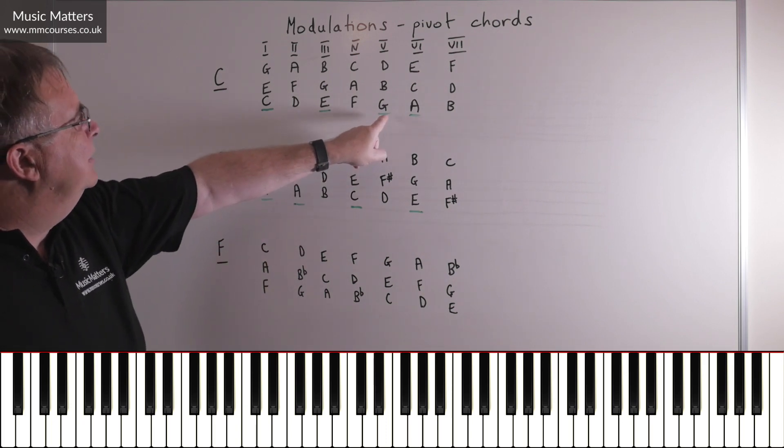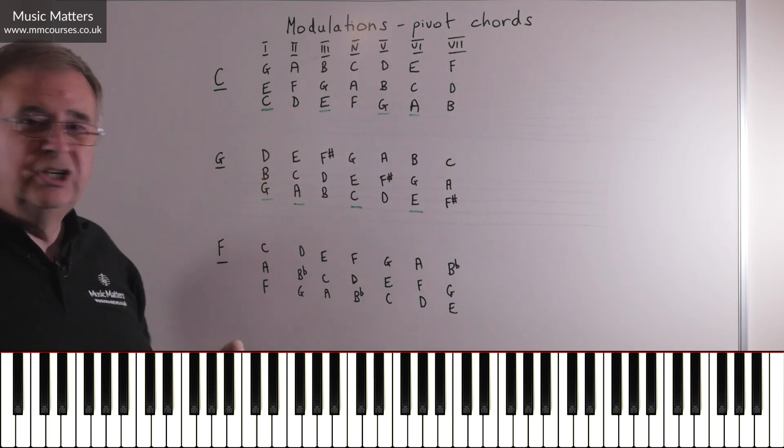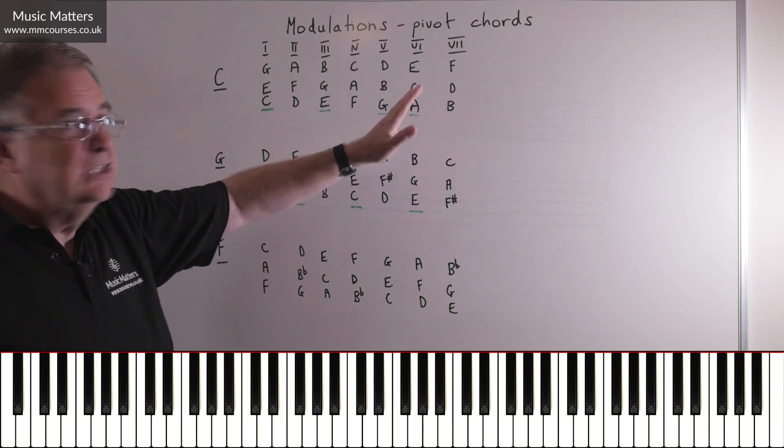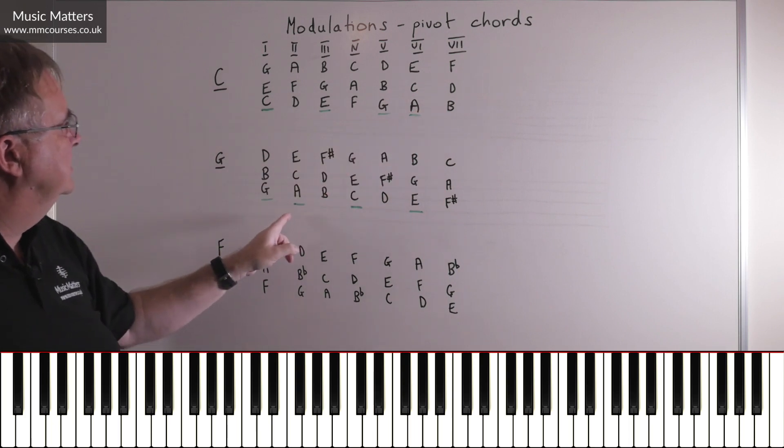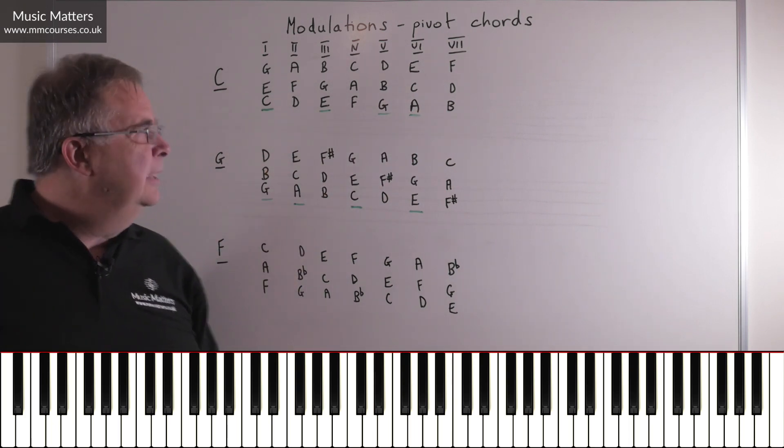Here's a strong one, because this is chord V in C major, but it's chord I in G major, so that's a nice strong pivot chord, isn't it? Here's a slightly weaker one, but it might work very well. Chord VI, that's going to take us to chord II. So you could make some decisions based on that.